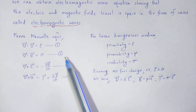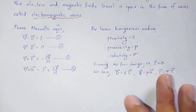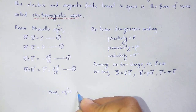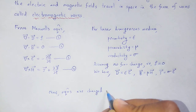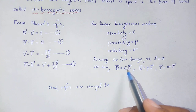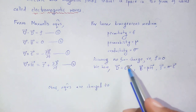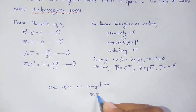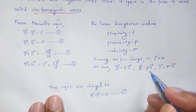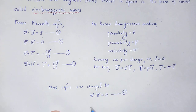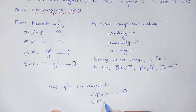Substituting these, the equations are changed. First equation: in place of D, that is epsilon E. Since we assume no free charges, rho is equal to 0, therefore grad dot E is equal to 0 — equation number 5. Similarly, equation number 2: in place of B, substitute mu times H. Therefore, dividing by mu, grad dot H is equal to 0 — equation number 6.